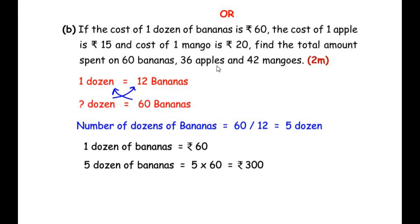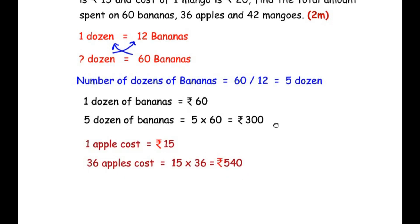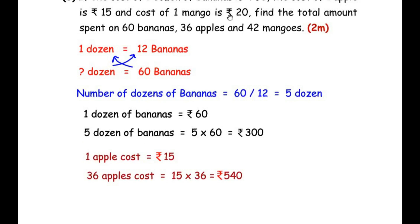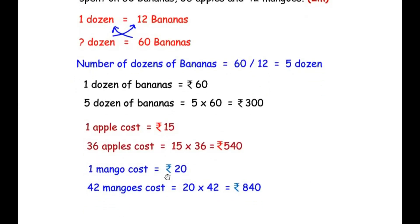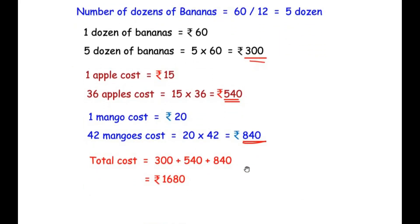The cost of 36 apples: 1 apple costs Rs.15, so 36 apples cost 36 × 15 = Rs.540. The cost of 42 mangoes: 1 mango costs Rs.20, so 42 mangoes cost 42 × 20 = Rs.840. Total cost of all fruits = Rs.300 + Rs.540 + Rs.840 = Rs.1680.